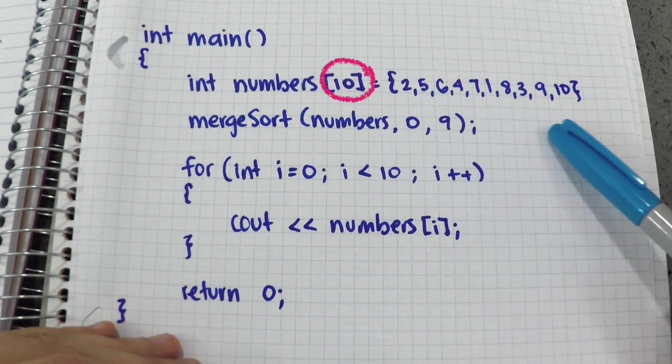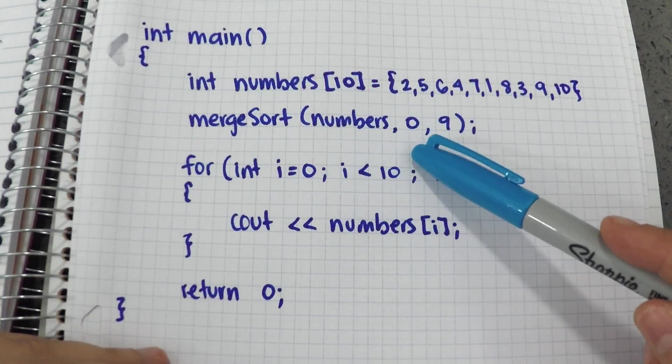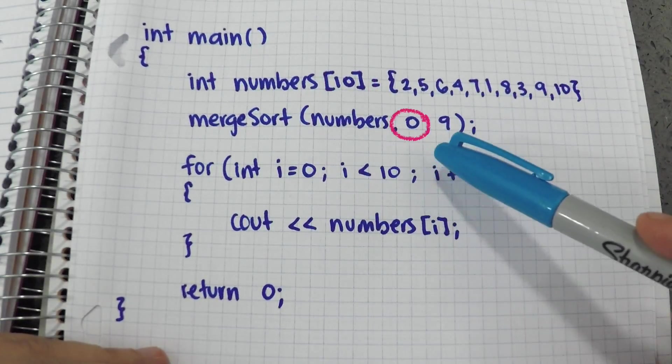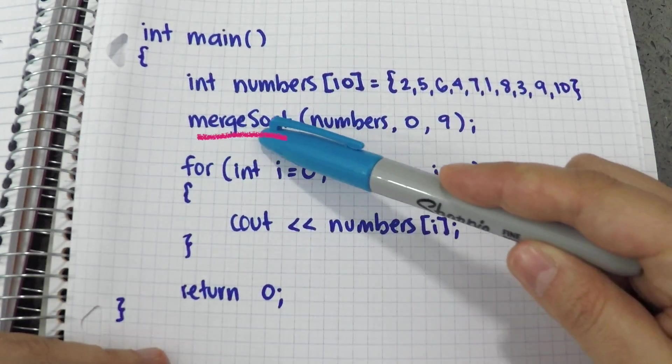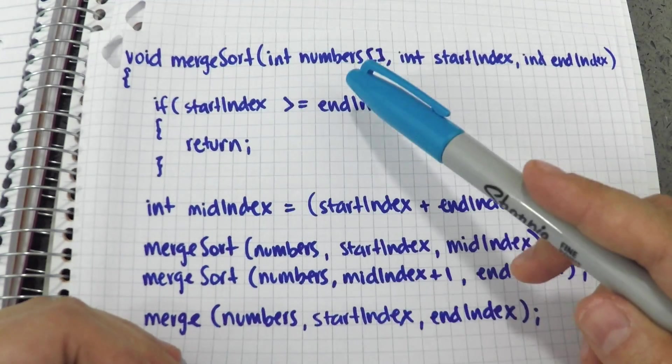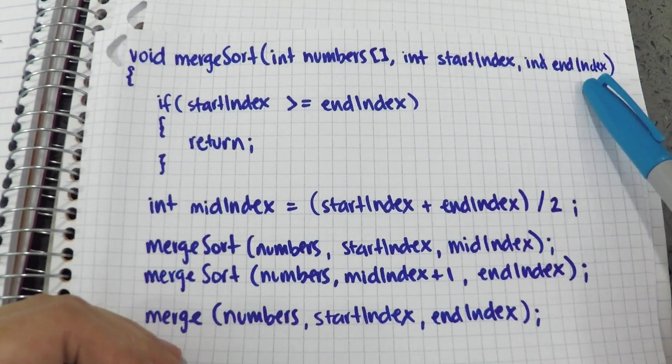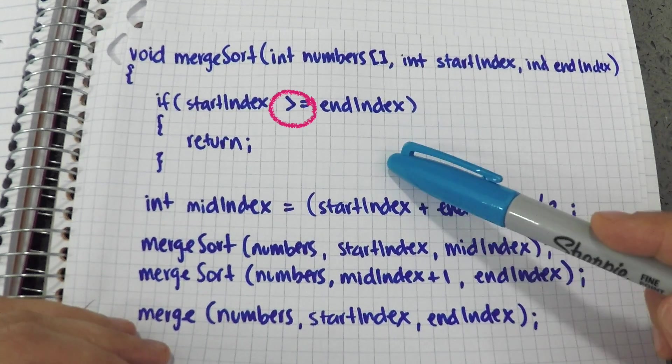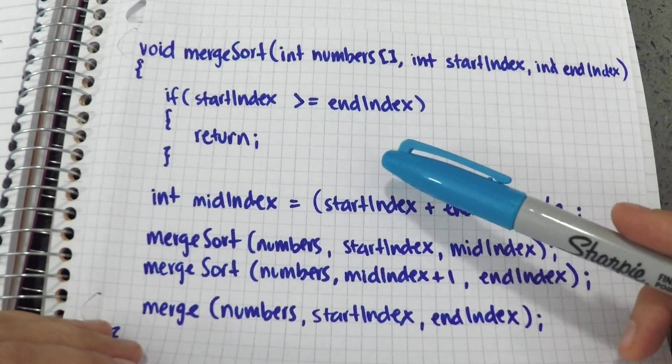First, I create an array of 10 unsorted numbers. Then, I pass the array with its start and end indices into the Merge Sort function. In the Merge Sort function, since I call this function recursively, the first thing I do is I check if the start index is greater than or equal to the end index to know if I am done.